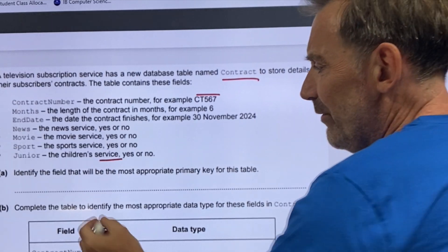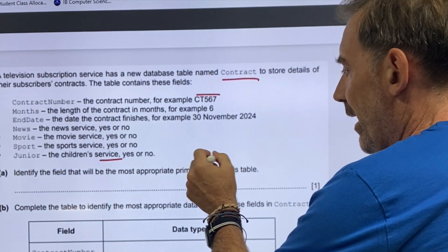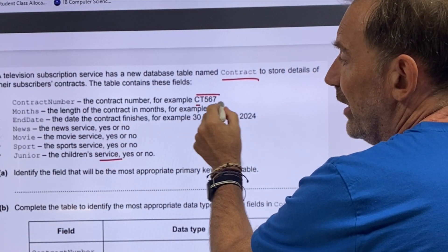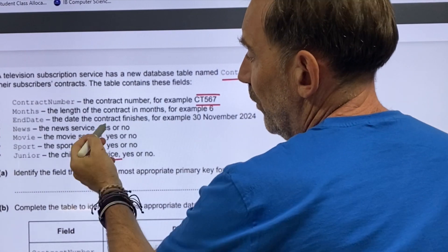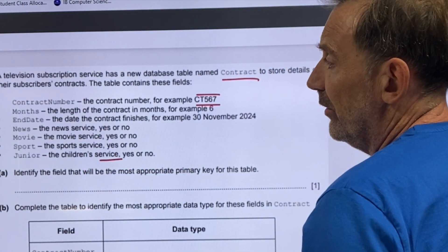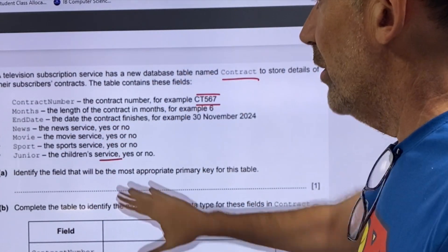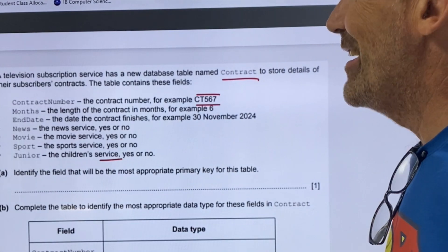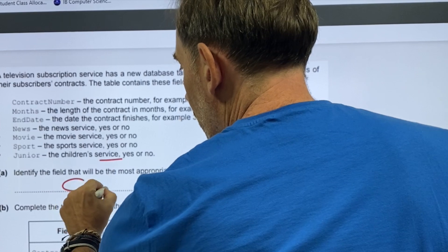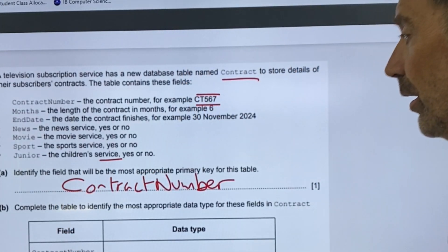Identify the field that will be the most appropriate primary key for this table. Well, it's obviously the first one because that looks like a unique identifier. Boolean certainly can't be. A date field can't be. And months, obviously, a month of contract, I'm sure there's going to be plenty on a six-month contract. So let's put in here, contract number.